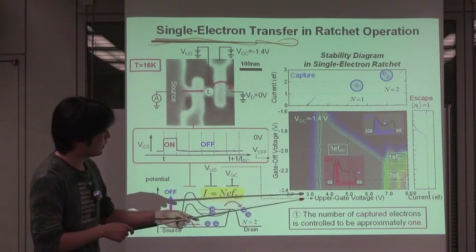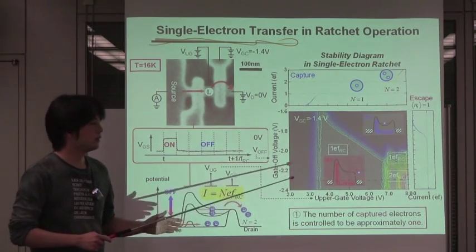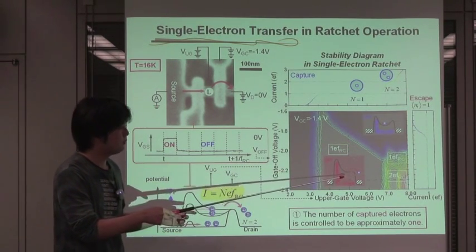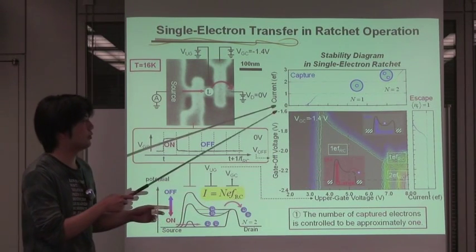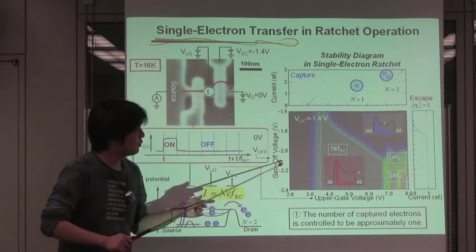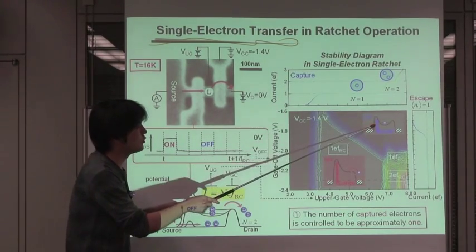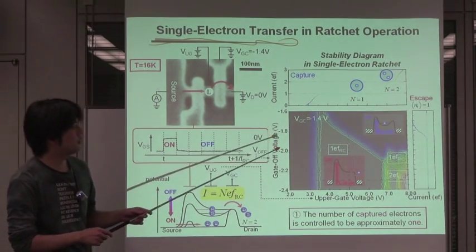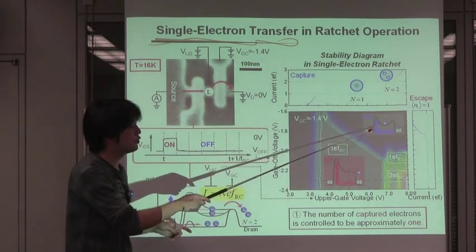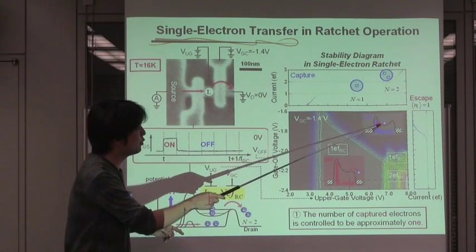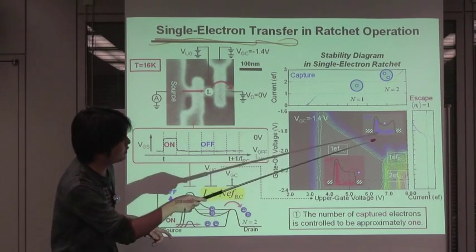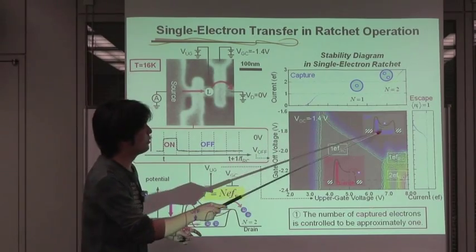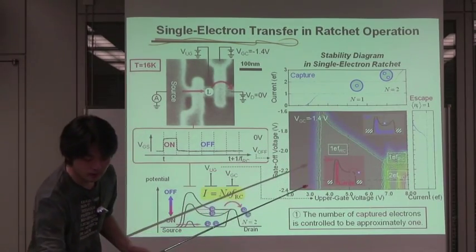Whether or not the captured electron can be actually ejected depends on the gate R voltage. A negatively small gate R voltage induces incomplete ejection of the single electrons. As you can expect, if we wait for more time with the left side gate switched off, these remaining electrons can escape from the quantum dot.